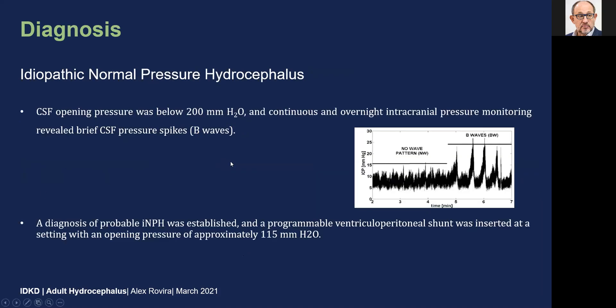Based on this radiological diagnosis, intracranial CSF pressure monitoring was performed, demonstrating a CSF opening pressure below 200 millimeters of water but with continuous overnight brief CSF pressure spikes — the so-called beta waves. This intermittent increase of CSF pressure associated with a normal opening pressure supports the diagnosis of normal pressure hydrocephalus, and the neurosurgeons decided to treat the patient with a ventriculoperitoneal shunt.